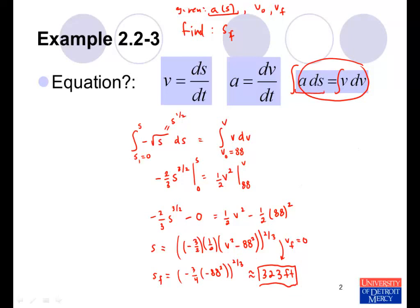Even though we didn't carry out all of the units on all of the different coefficients, we know that the units will work out correctly because we made them all consistent. We made all of the lengths in terms of feet and all of the times in terms of seconds. So that concludes this example.